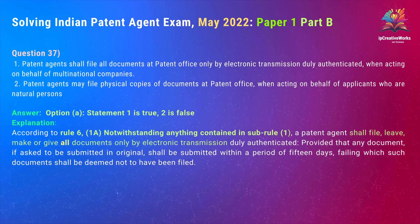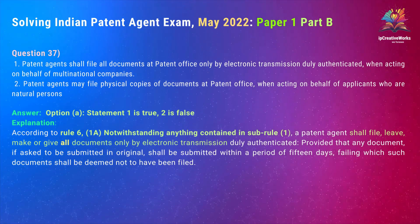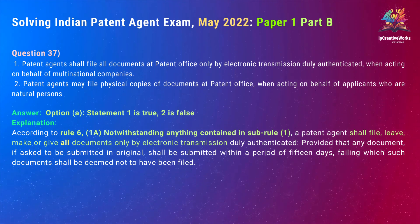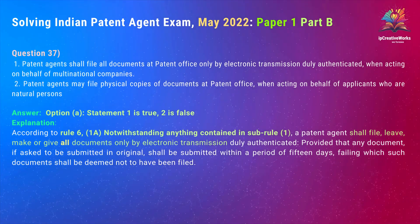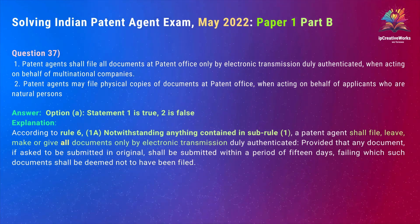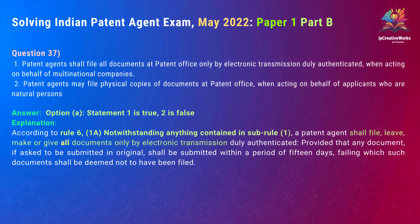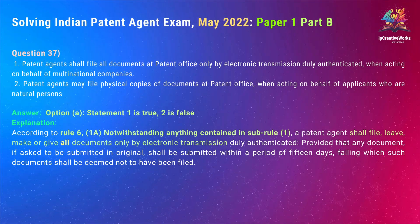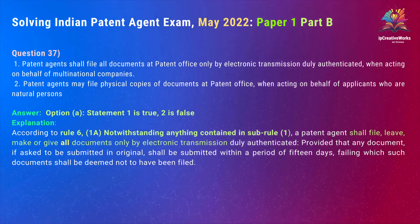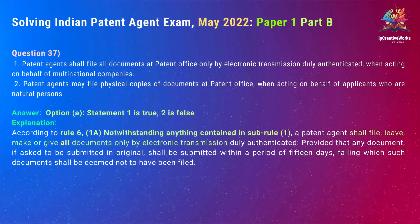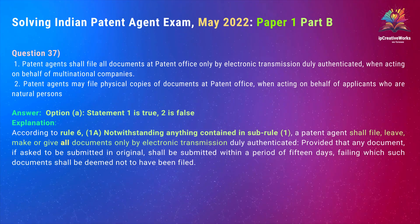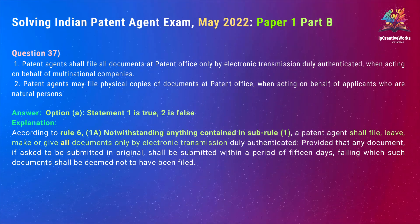Question 37. Statement 1: Patent agents shall file all documents at the patent office only by electronic transmission duly authenticated, when acting on behalf of multinational companies. Statement 2: Patent agents may file physical copies of documents at the patent office when acting on behalf of applicants who are natural persons. The correct answer is Option A — Statement 1 is true and Statement 2 is false. According to Rule 6(1a), a patent agent shall file, leave, make or give all documents only by electronic transmission duly authenticated. Any document asked to be submitted in original shall be submitted within 15 days, failing which such documents shall be deemed not to have been filed.